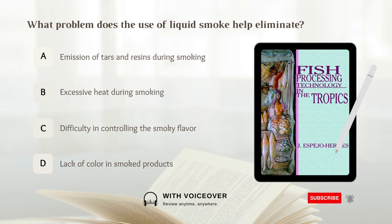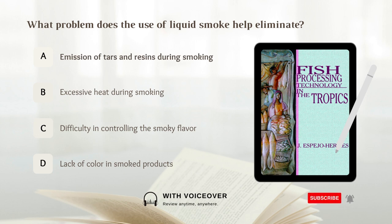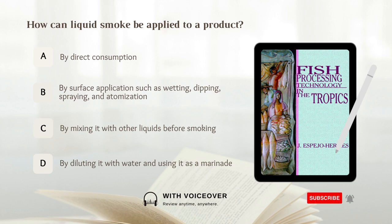What problem does the use of liquid smoke help eliminate? A. Emission of tars and resins during smoking. B. Excessive heat during smoking. C. Difficulty in controlling the smoky flavor. D. Lack of color in smoked products. Answer: A. Emission of tars and resins during smoking.